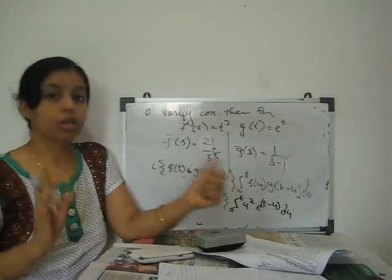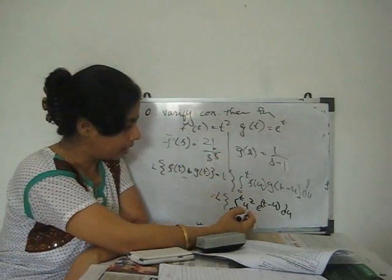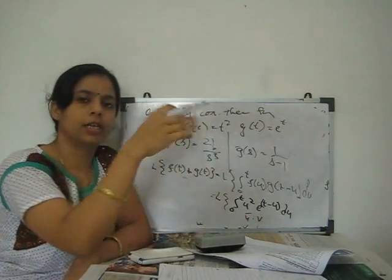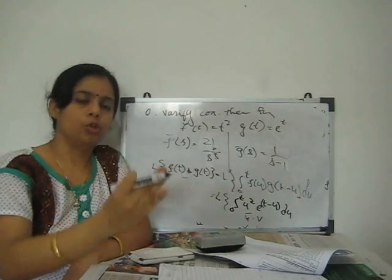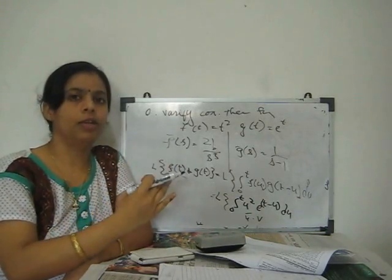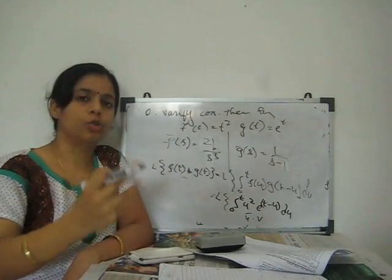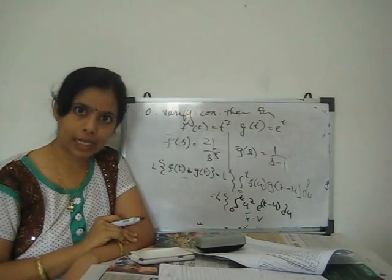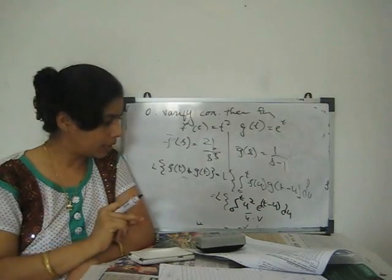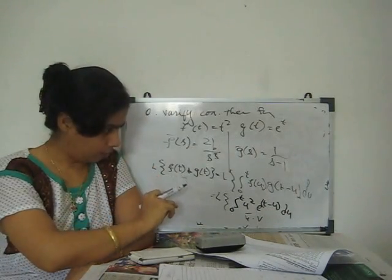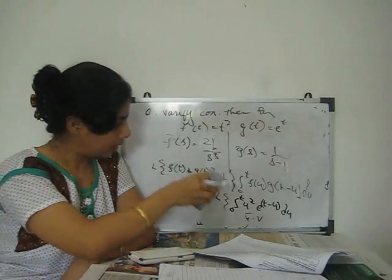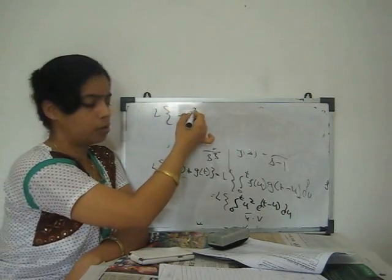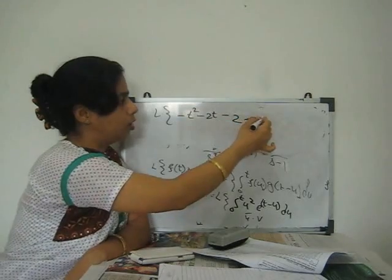To integrate ∫₀ᵗ u²·e^(t−u) du, use the u·v integration by parts formula: uv₁ − u'v₂ + u''v₃ − ... integrating and applying limits from 0 to t. After applying the limits, you obtain: e^t·(−t² − 2t − 2) + 2, or equivalently −t² − 2t − 2 + 2eᵗ.